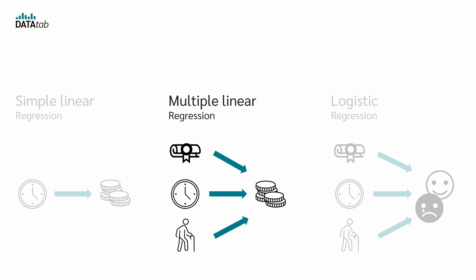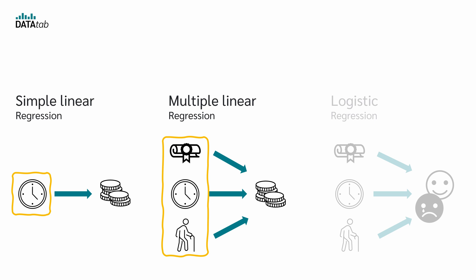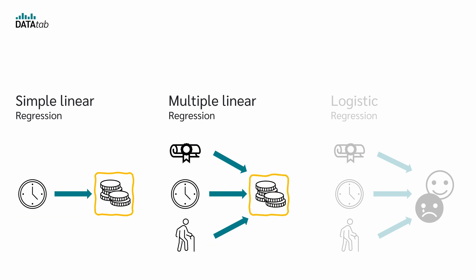Multiple linear regression, on the other hand, uses several independent variables to predict or infer the dependent variable — for example, the highest level of education, the number of hours worked per week, and the age of the person. Therefore, the difference between simple and multiple regression is that in one case only one independent variable is used and in the other case several. Both have in common that the dependent variable is metric.